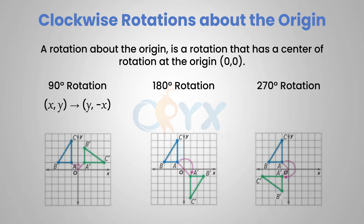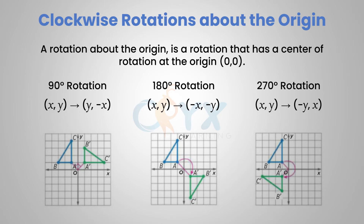For a 180 degree rotation, both the x and the y coordinates are negated to form (-x,-y). Figure ABC was rotated 180 degrees about the origin to form A prime, B prime, C prime. For a 270 degree rotation, the x and y coordinates are reversed again and the y coordinate is negated, so (x,y) becomes (-y,x). Figure ABC is again rotated 270 degrees to form A prime, B prime, C prime.